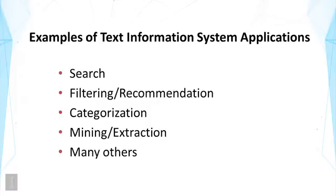Here are some examples of useful text information systems — this is by no means a complete list. I categorize them into different categories, but you can imagine other kinds of applications. Search is one example — we all know search engines, especially web search engines. All of you are likely using Google or Bing or another web search engine all the time. We also have library search systems, and wherever you have a lot of text data you would have a search engine — for example, a search box on your laptop to search content on your computer.